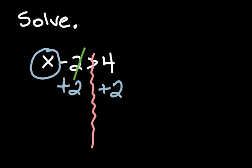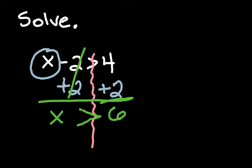The 2's cancel out, that leaves you with an x, and 4 plus 2 is 6. Now, the one thing that's different is, instead of having the equal sign, you have the greater than sign. And that's it. x is greater than 6.